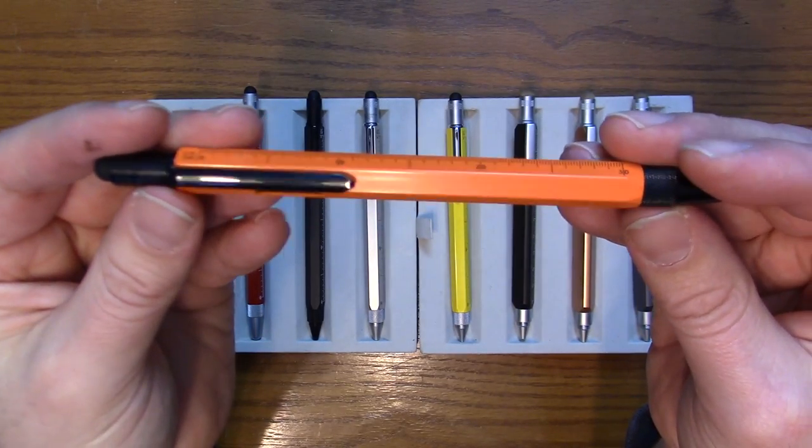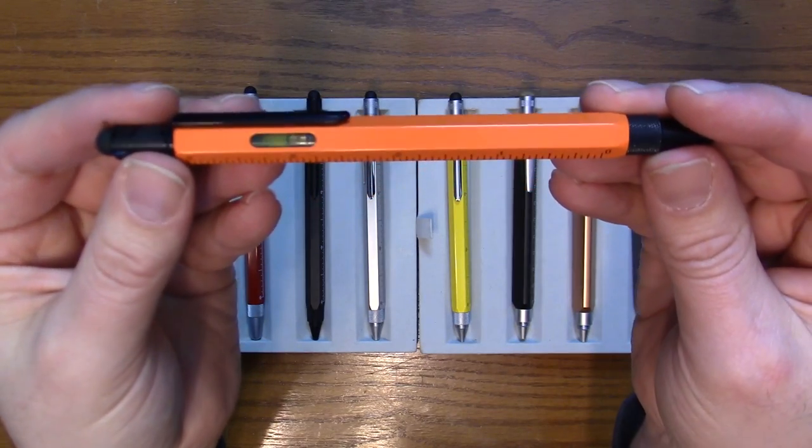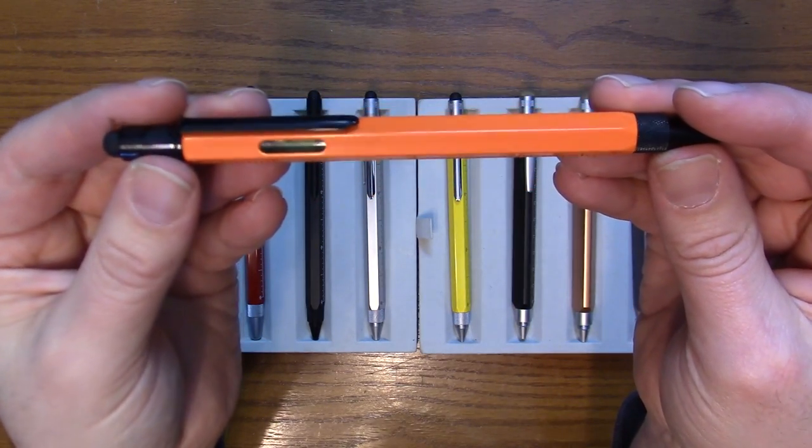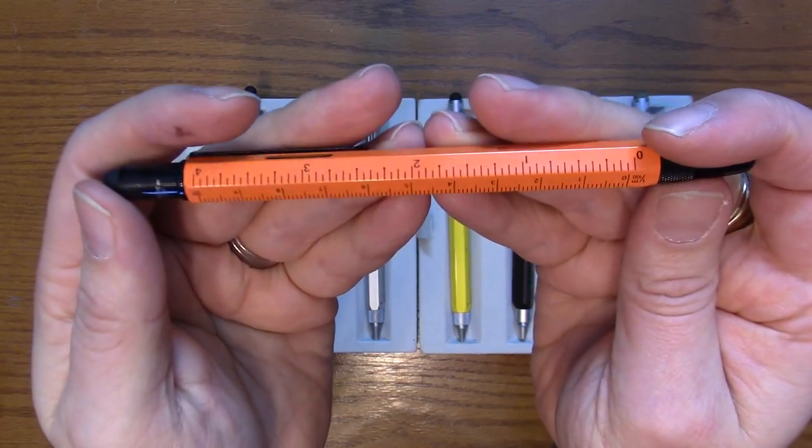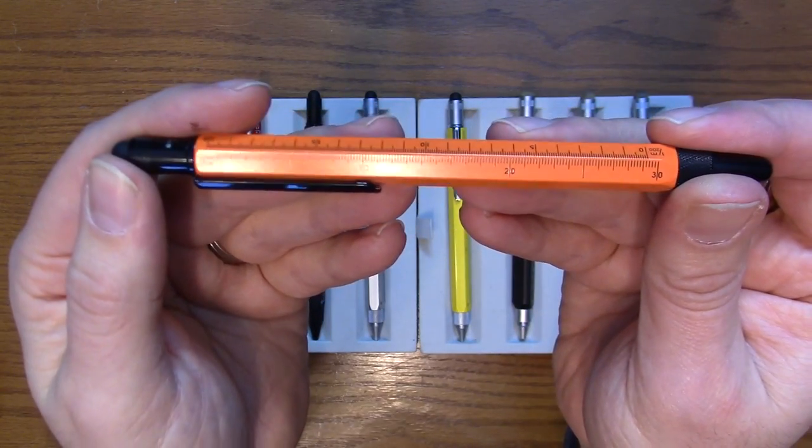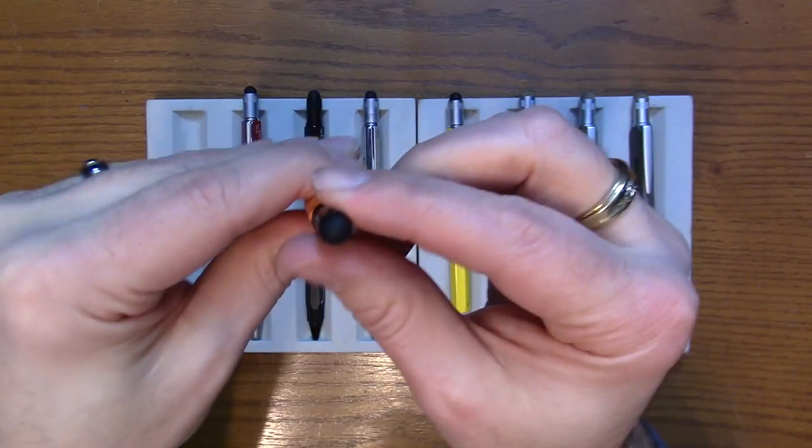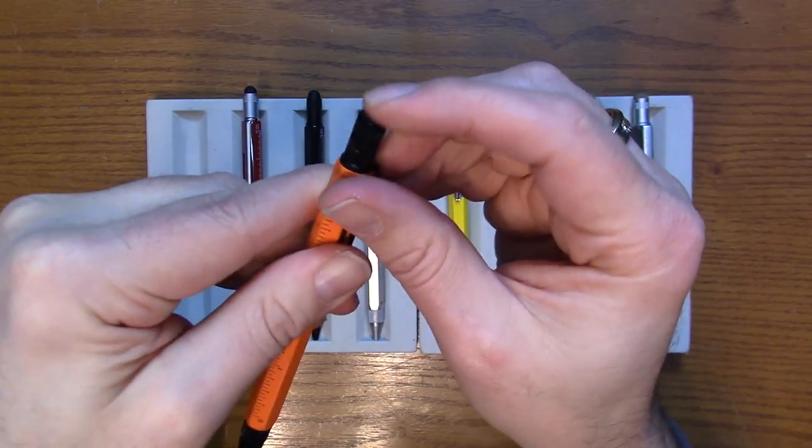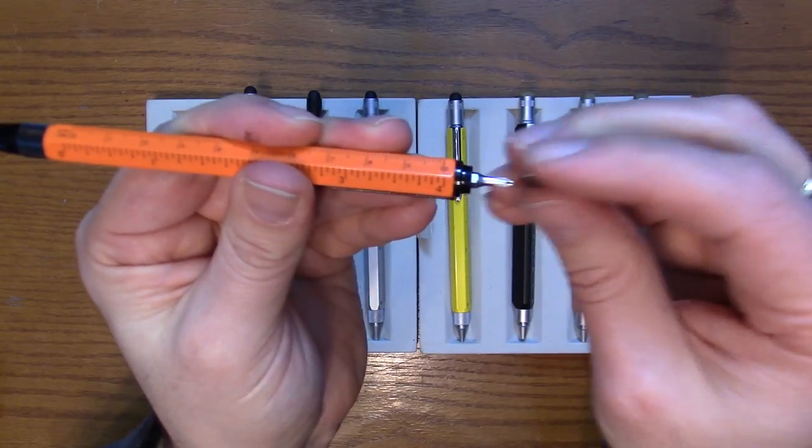These are a nine function pen. We have a level built into the pen, a couple of different scales here depending on what you want to use. We've got a stylus on the end so you can use it with your phone or your iPad, your touchscreen device.